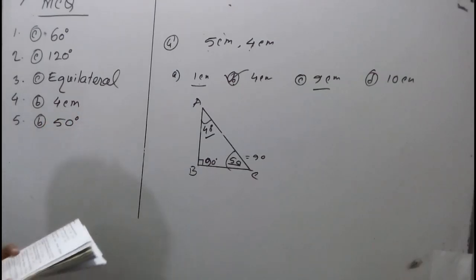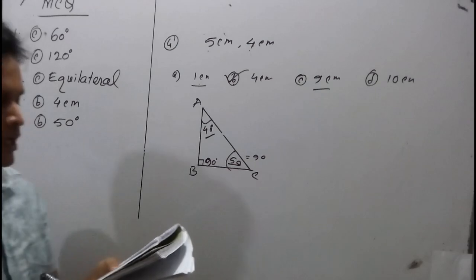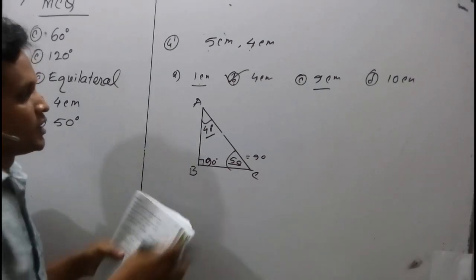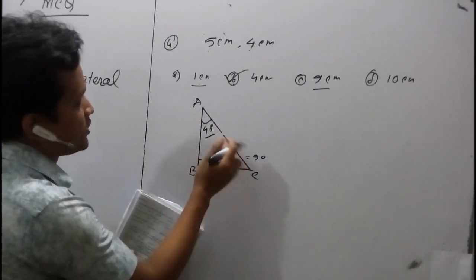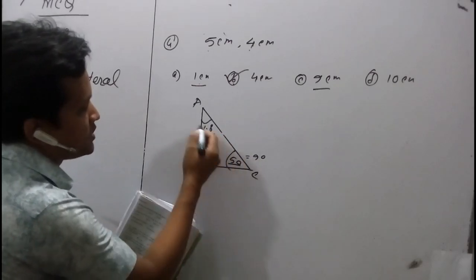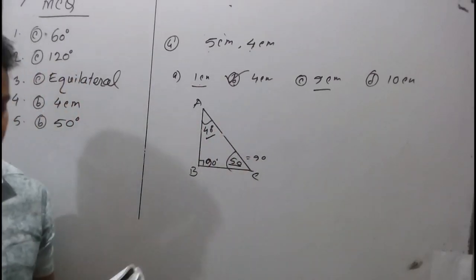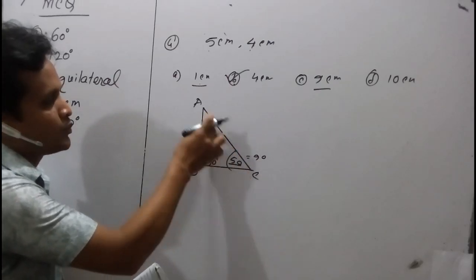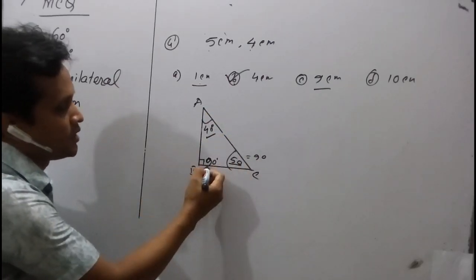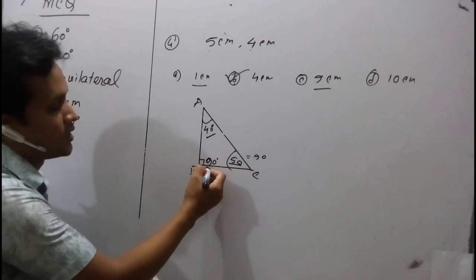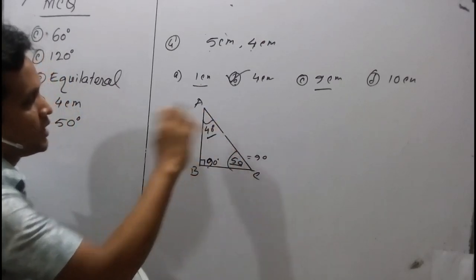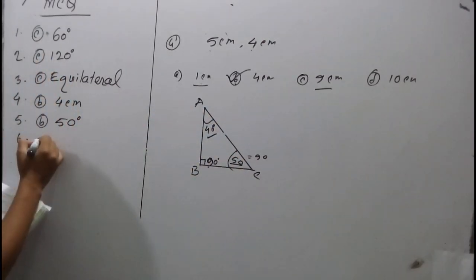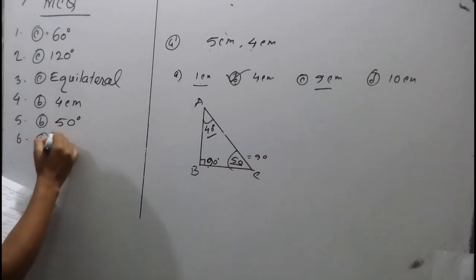Question six: if the sum of two angles of a triangle is equal to the third angle, then that third angle must be 90 degrees. This means the triangle is a right angle triangle. Answer: option C, right angle triangle.